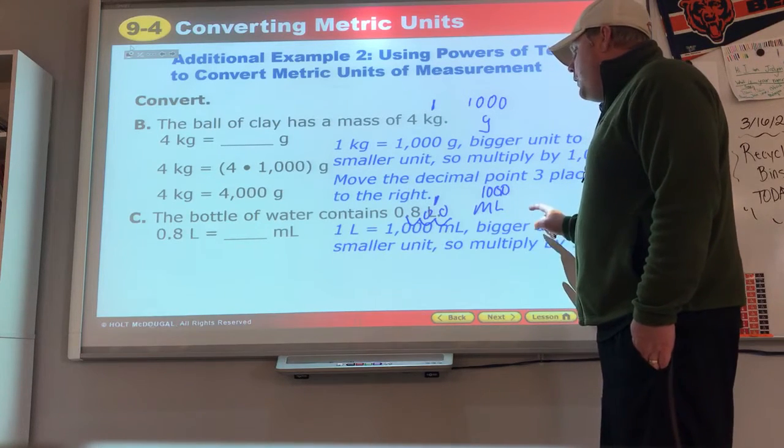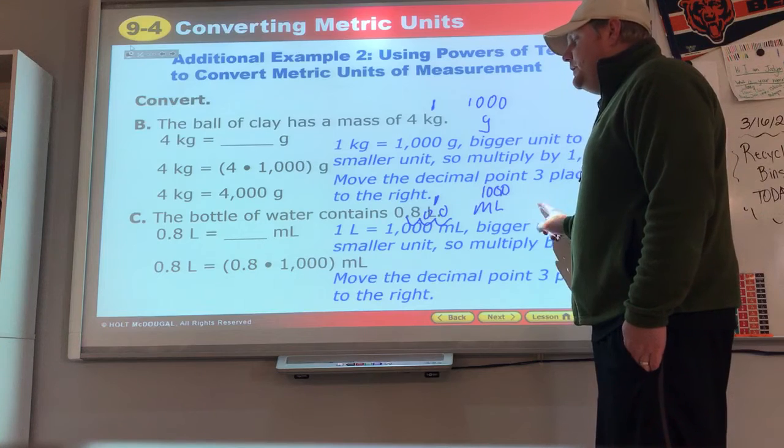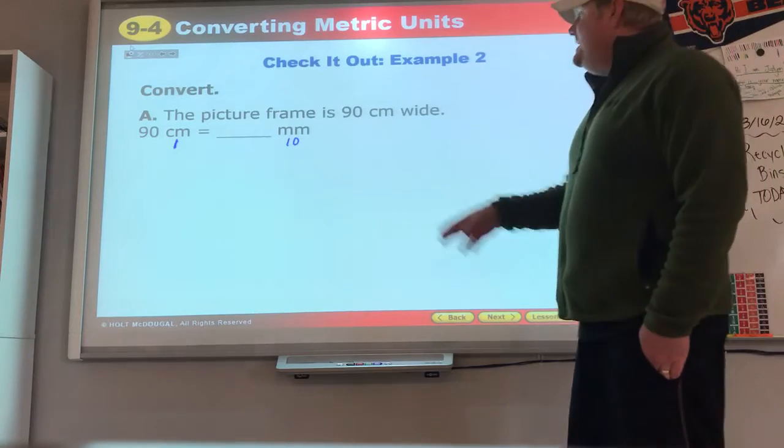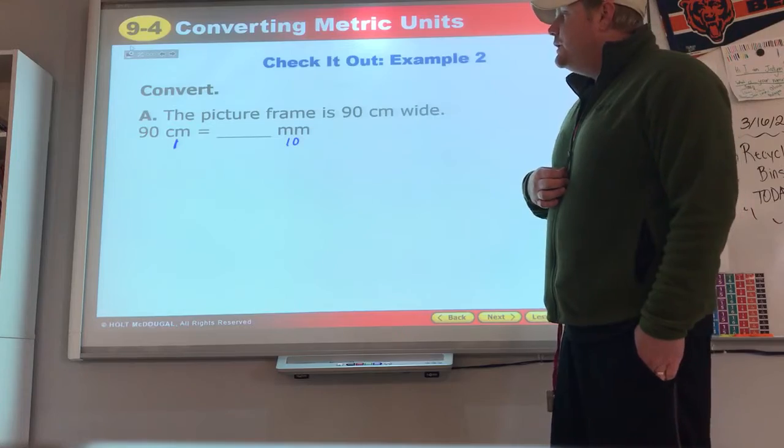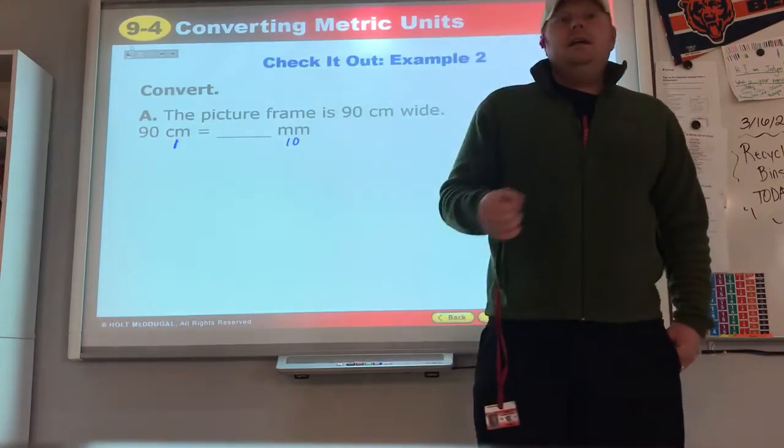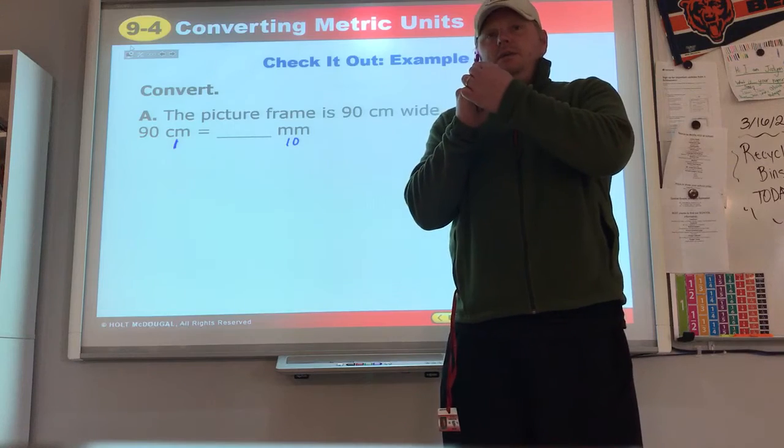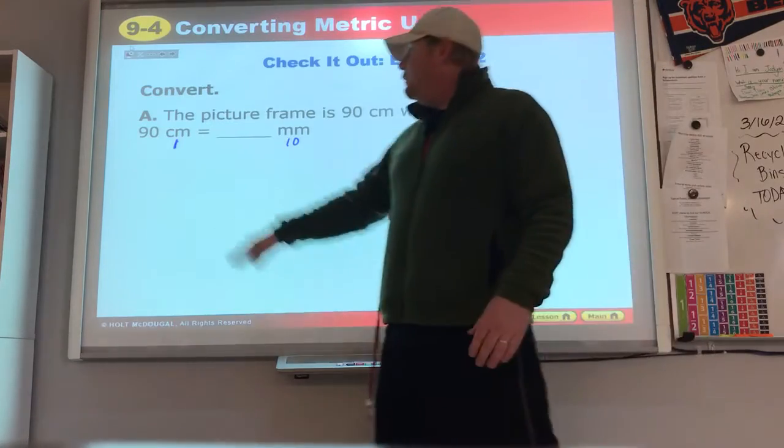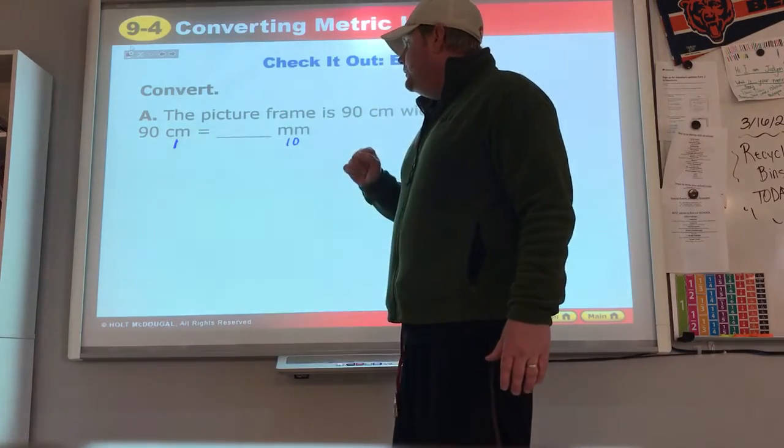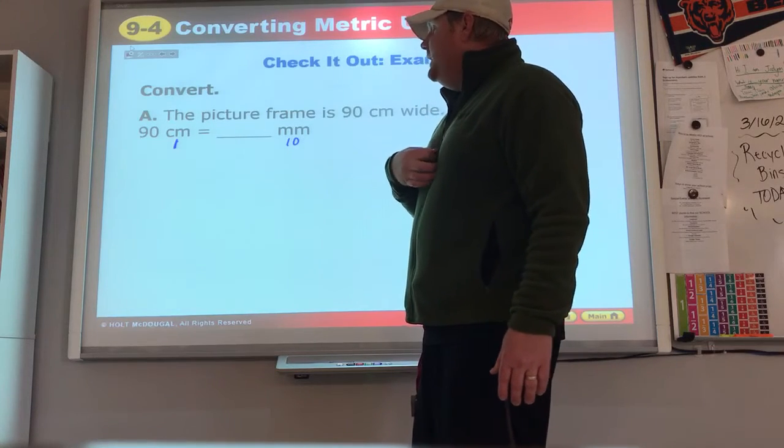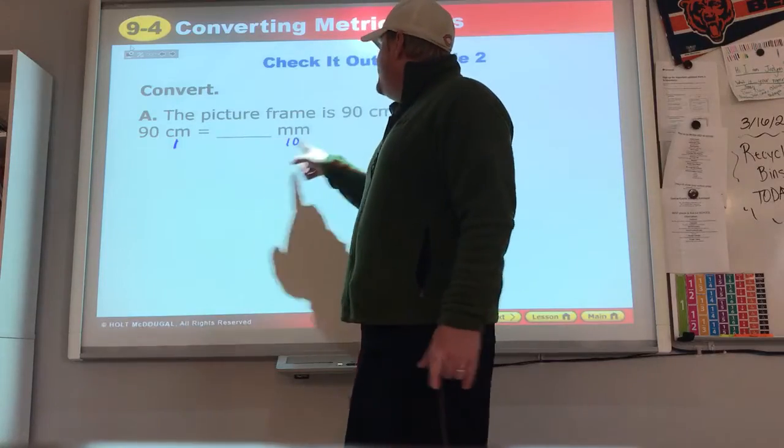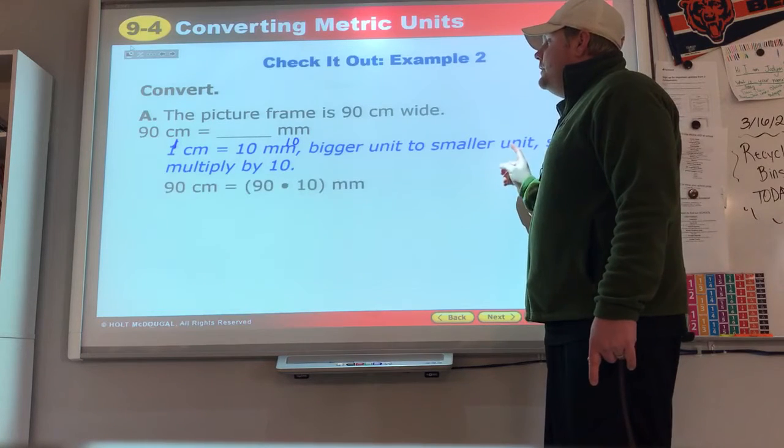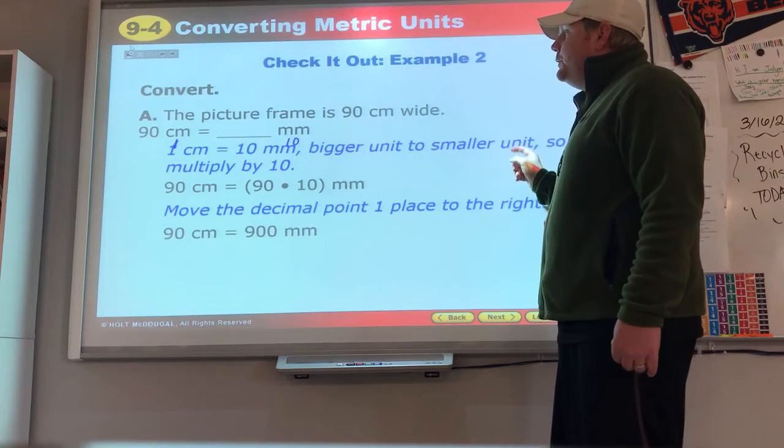Convert. The frame is 90 centimeters wide and they want to know how many millimeters. A centimeter is about your pinky finger turned sideways, maybe a little less. A millimeter is like a tenth of that. So we are going from something big to something smaller. Big to smaller means we multiply. How do we know the number? Well, 10 millimeters equals 1 centimeter. 90 times 10 is going to be our 900 millimeters that we get for our answer.